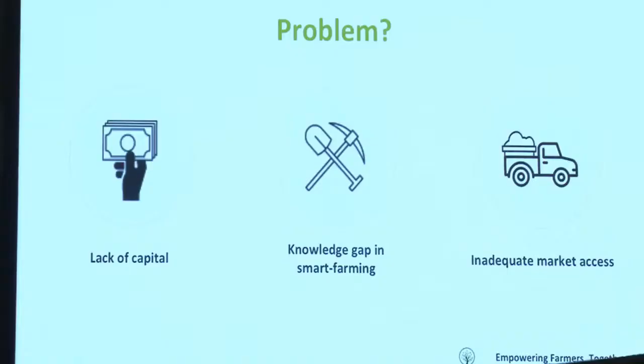Just like in Rwanda, many countries in Africa produce approximately three-quarters of the food they eat, thanks to small-scale farmers. However, despite being essential food producers, these farmers are constantly relegated to subsistence living because of three big problems: they are mostly unbankable and cannot access the necessary funding; they don't know smart farming techniques; and even when they solve the first two problems, at harvest they don't know the best market to sell their produce.